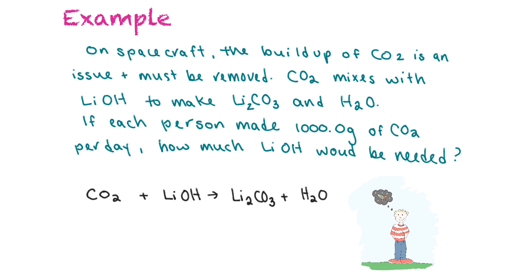The reaction is CO₂ + LiOH → Li₂CO₃ + H₂O. Checking the balance: carbons are balanced; oxygens — we have 2 plus 1 on the left and 3 plus 1 on the right, giving 4 on each side; we have only 1 lithium on the left but 2 on the right. So we put a 2 in front of LiOH. That gives 2 lithium, 2 plus 2 oxygens (4 total), and 2 hydrogens on each side. The reaction is now balanced.